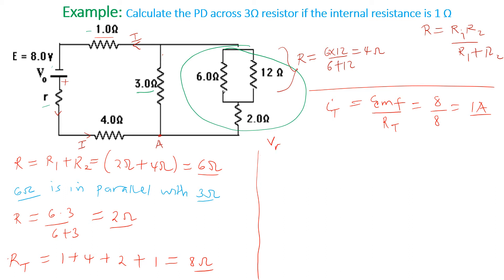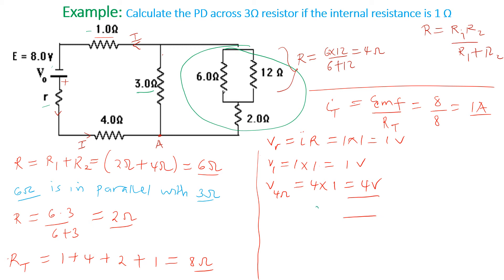What we do is find the PD across the one-ohm internal resistance, the one-ohm resistor, and the four-ohm resistor, then subtract from the total EMF. The PD across the internal resistance is I times R = 1 times 1 = 1 volt. The PD across the one-ohm resistor is 1 times 1 = 1 volt. The PD across the four-ohm is 4 times 1 = 4 volts.